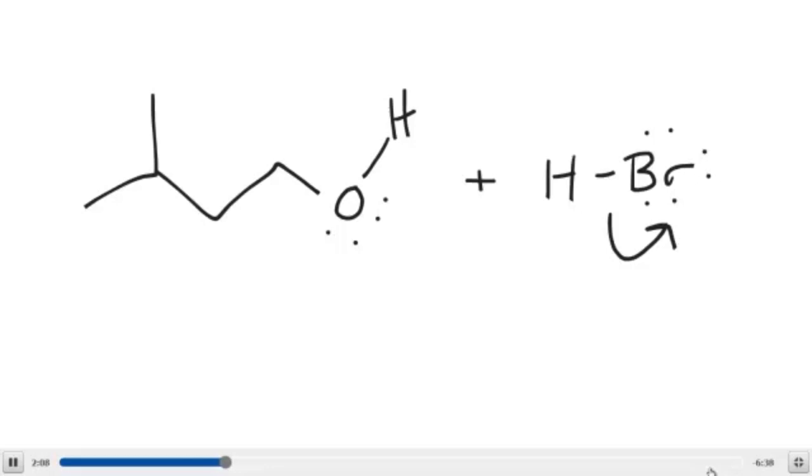You look over here at the substrate. You need to find an element that is capable of being a proton acceptor, which is the Bronsted-Lowry definition of a base, or an electron pair donor, which is the definition of a Lewis base. The only atom that meets those two requirements is oxygen, and oxygen will donate some of its lone pair electrons to pick up this proton.